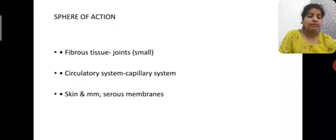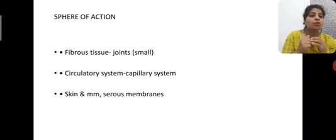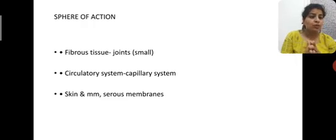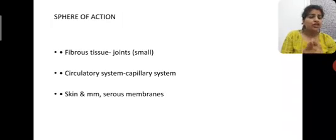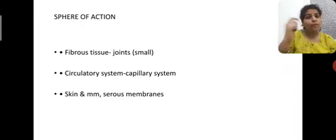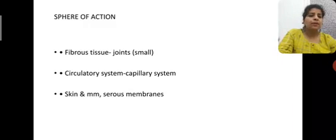The sphere of action refers to which body parts this remedy acts on best. The main action happens in fibrous tissues, with focus on small joints — not big joints. The fibrous tissue and the synovial membrane are affected, where inorganic deposits form. Inorganic deposits are mineral-related — calcium-related or gouty crystals — as opposed to carbon-related organic deposits. Action is also shown in the circulatory system, specifically the capillary system, and in the mucous membranes and skin.